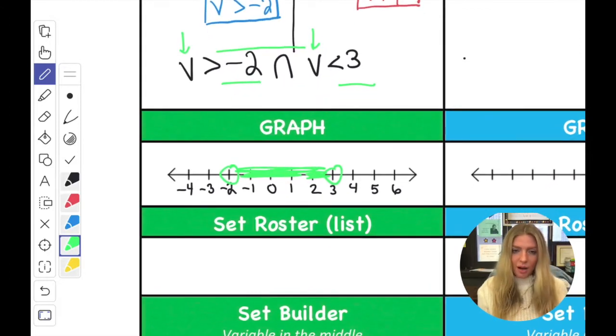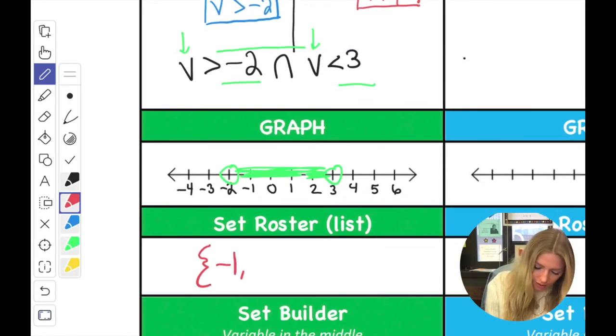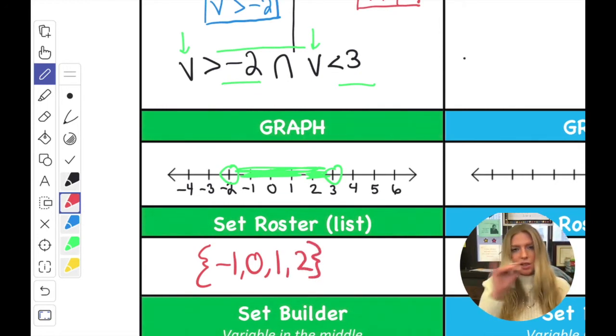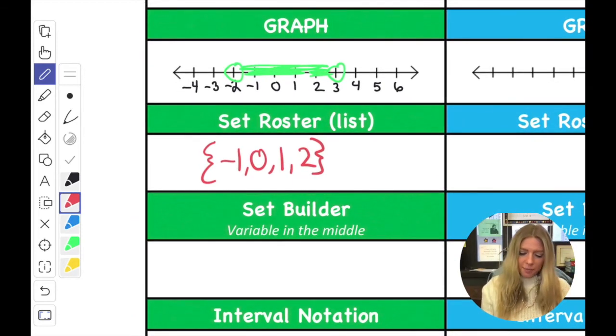All right, let's talk about what's in our roster. I understand it's all real numbers, but if we're only going to be writing the integers, you have to draw your French braces. The first number that's included is negative 1, 0, 1, and 2. 3 is not included, so I don't add it, and then finish it up with the brace.